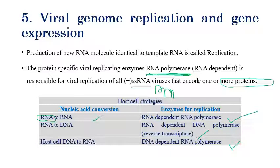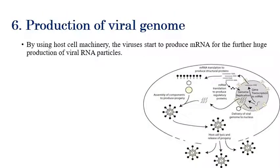For DNA viruses, DNA polymerase is the enzyme involved. By using the host cell machinery — now under control of the viruses — the virus starts to produce mRNA and then a huge amount of viral RNA particles. This messenger RNA is read by ribosomes, which start to produce a huge amount of viral amino acids and viral protein coat subunits.